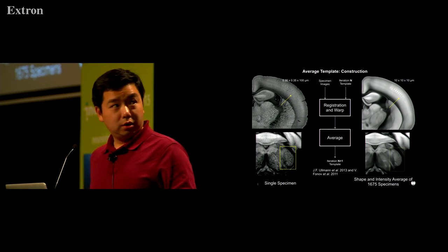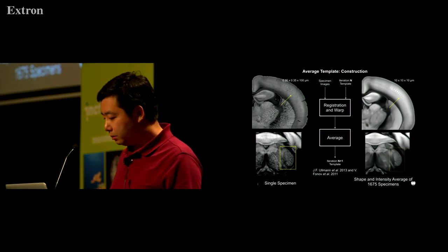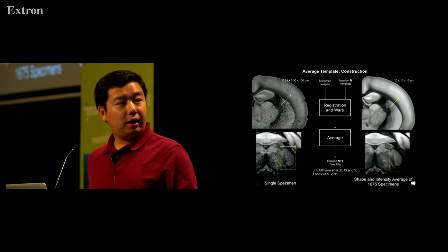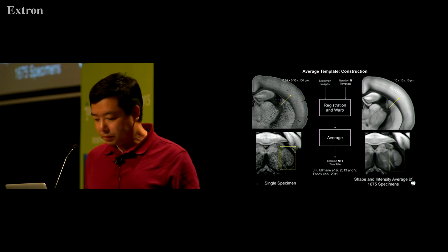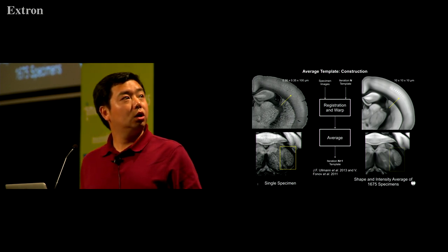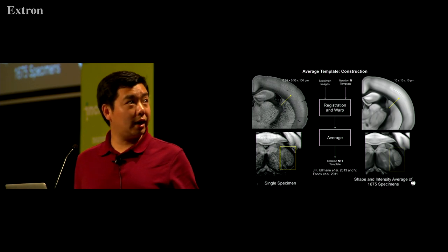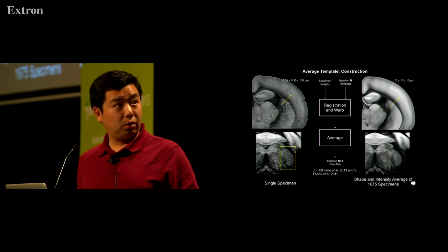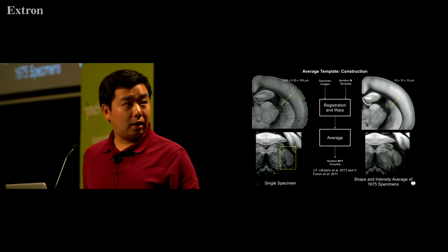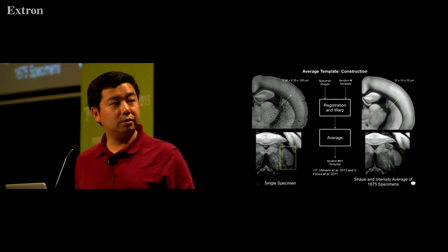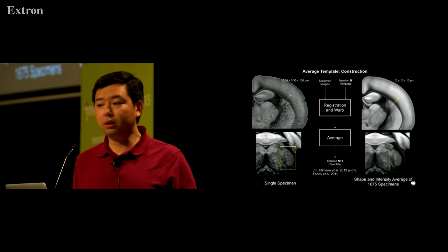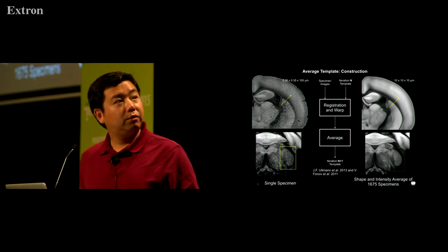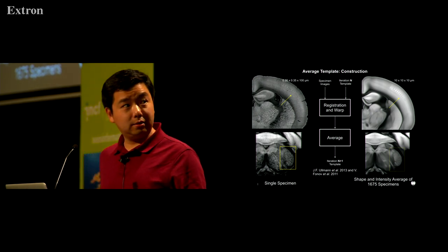We then introduce deformable registration. When the whole algorithm converges, we have an average template with average shape and average intensity. Comparing this template to any individual brain in the population, you can see that unique features are no longer visible in the average template, which is actually good. On the other hand, features common to most brains in the population have been greatly enhanced — for example, the barrel fields and the barrel aids in the brainstem. These two videos show the process of how this algorithm converged.